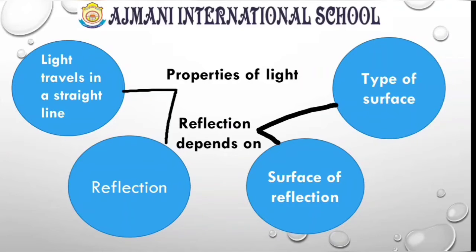Another property is reflection. Reflection is a property of light which happens when light falls on a surface and bounces off the surface. This process helps us to see objects. This reflection depends on two main things: the type of surface and the surface of reflection.